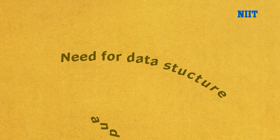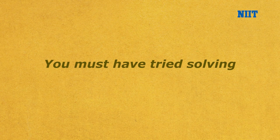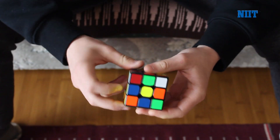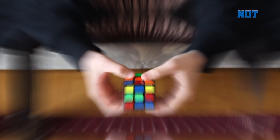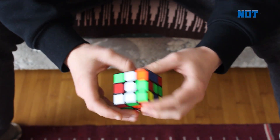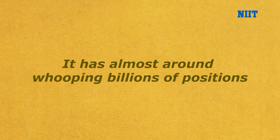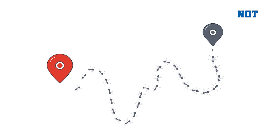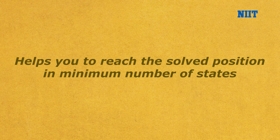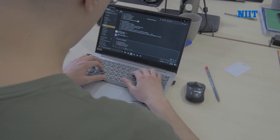Now, let us understand the need for data structures and algorithms. In the real world, you must have tried solving a Rubik's cube once in your life. How easy or difficult you found it depends on the path you might have taken to solve it. It has almost around a whopping billions of positions, so you can imagine the total number of paths to reach all those positions. This is where DSA comes in handy. Using an algorithm here helps you to reach the solved position in minimum number of states. You can imagine how powerful it is to know data structures and algorithms even before knowing how to code.